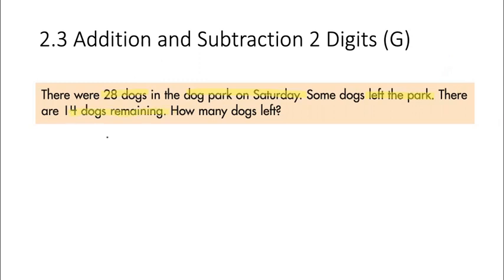So let me write it out. 28 dogs minus - because they left, right? Left meaning we subtract. But we don't know how many. Question mark. What remains? Remaining, meaning equal? 14.